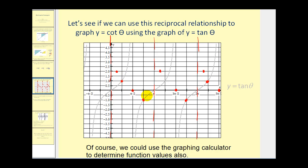Let's find a couple more key values. Where tangent theta is equal to negative one-half, the reciprocal of negative one-half is negative two, here and here.